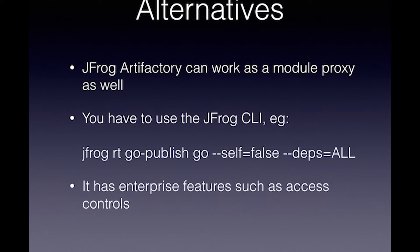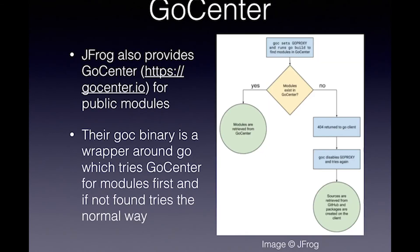It's slightly more clunky than a normal go proxy, but it has enterprise features like access control which managers apparently can't live without. JFrog also has a public module thing called GoCenter, which last time I checked had something like 80,000 to 90,000 modules. You also have to use a separate binary called go-c, which is a wrapper around go that first goes to GoCenter, and if it can't find anything it tries again directly. But that will probably change now that you can have multiple entries in your GOPROXY in 1.13.